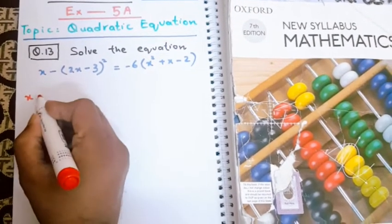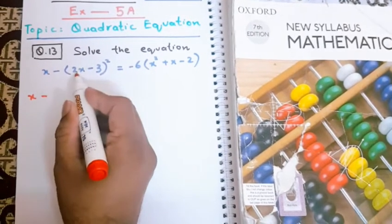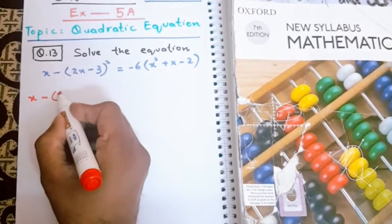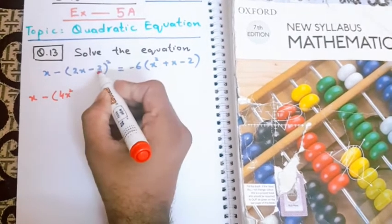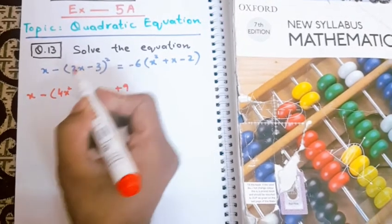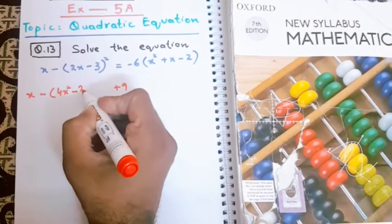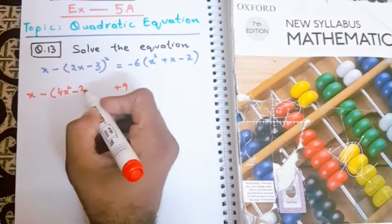Okay, let's start. First of all, I will open this bracket. The first value is 2x, its square will be 4x². The second value is 3, its square will be 9. The middle sign is minus, so the formula has 2 - this 2 belongs to the formula at this stage.